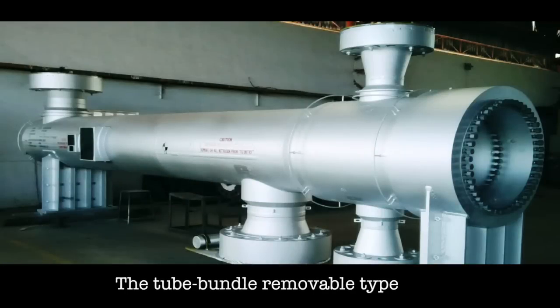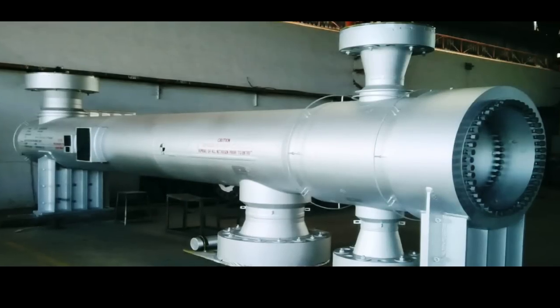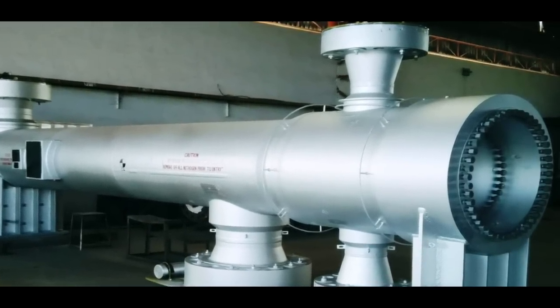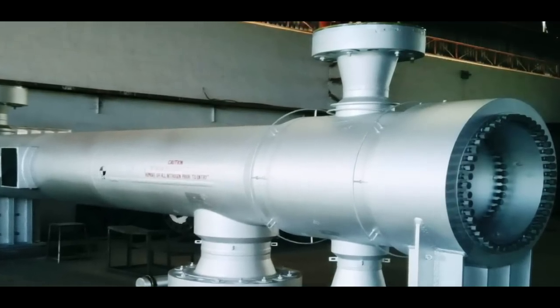The tube bundle removable type has the advantage of allowing maintenance without disturbing the pipeline on the shell side and the tube side. It is the safest to use, as hazardous gases cannot escape to the atmosphere.